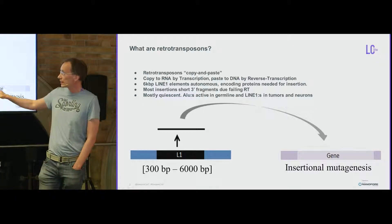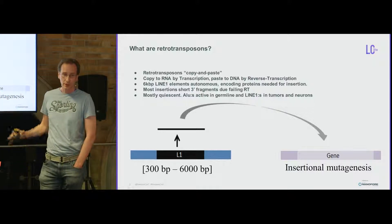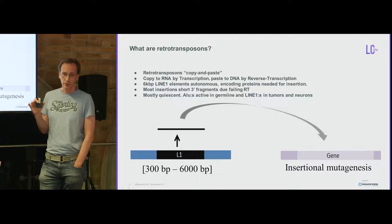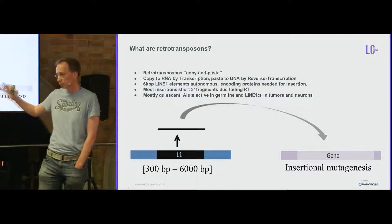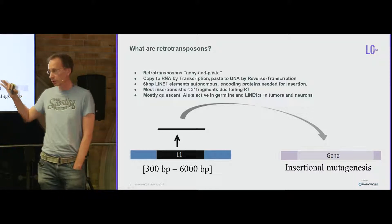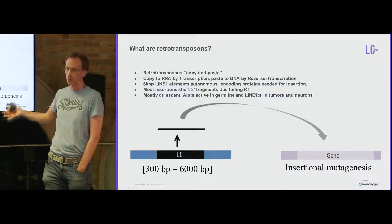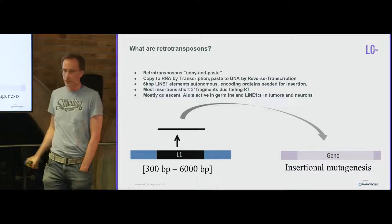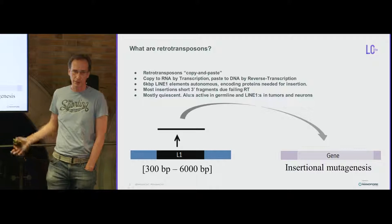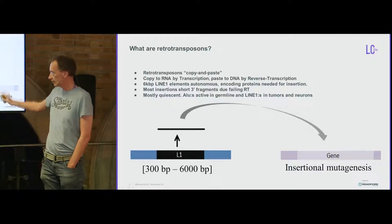The 6 KB LINE-1 elements are the autonomous retrotransposons. They contain two open reading frames that encode proteins responsible for reverse transcription and nicking the DNA.